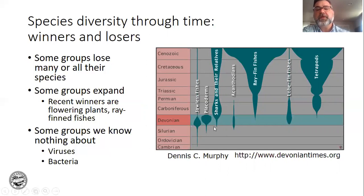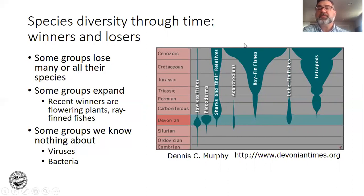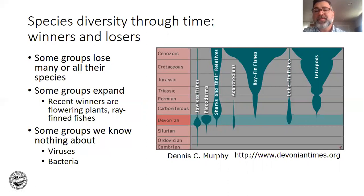The Placoderms — fish with very thick outer skin — just went extinct. Some of the winners would be the ray-fin fishes and the tetrapods. Ray-fin fishes are things like trout, bass, swordfish, groupers, sunfish, and pickerel — all doing well. When I say doing well, I mean the number of species has been increasing lately, though there are particular species that are not doing well at all.